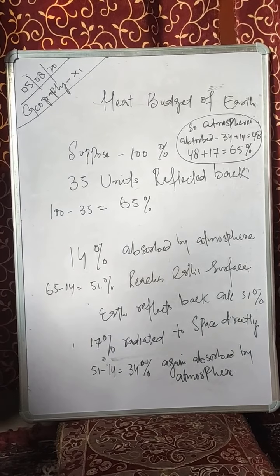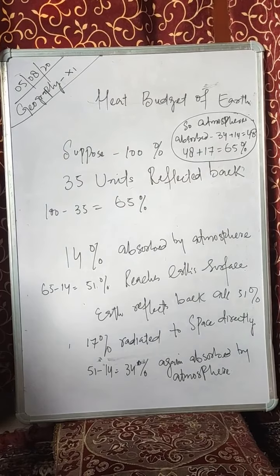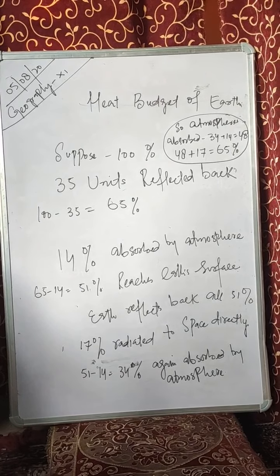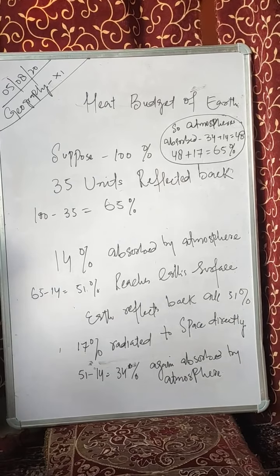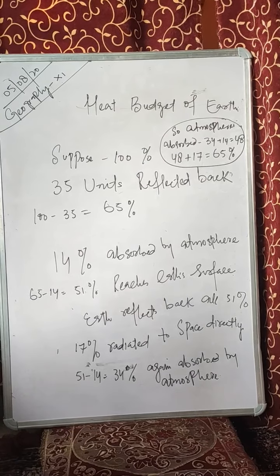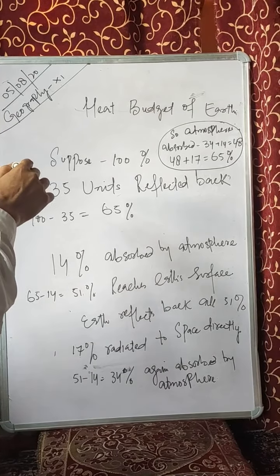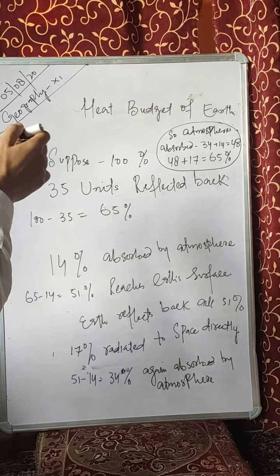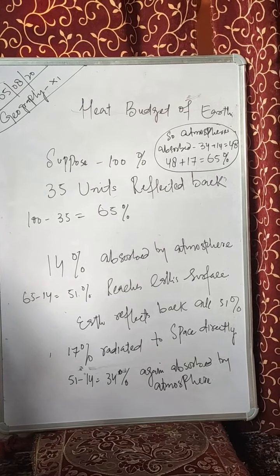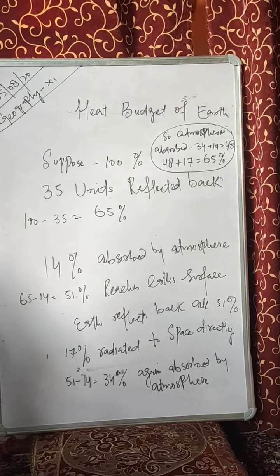Today we are taking chapter number nine, and its topic is the heat budget of the earth. The heat budget of the earth is concerned with the earth as a planet — the heat on the earth's surface which it is receiving from the Sun is not getting accumulated. There is a balance, and the earth as a whole does not accumulate or lose heat; it is maintaining the balance in its temperature.